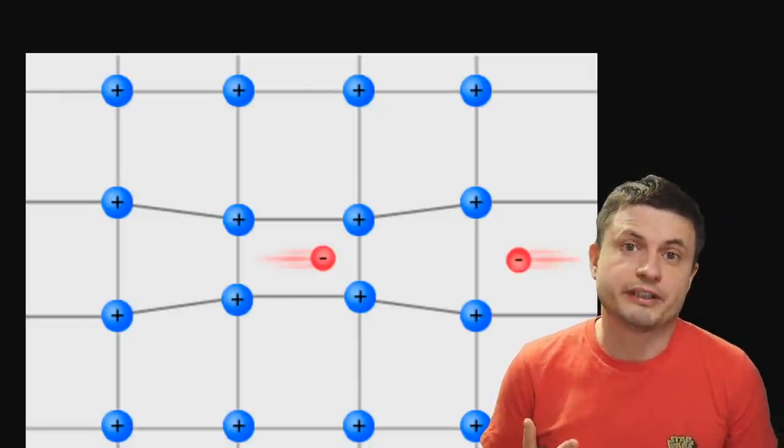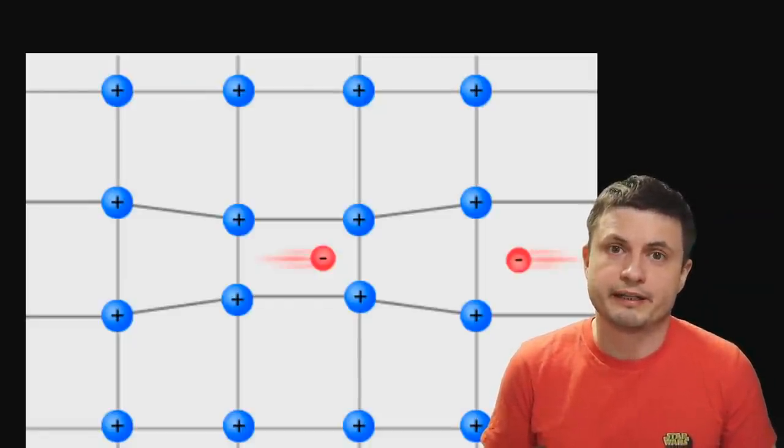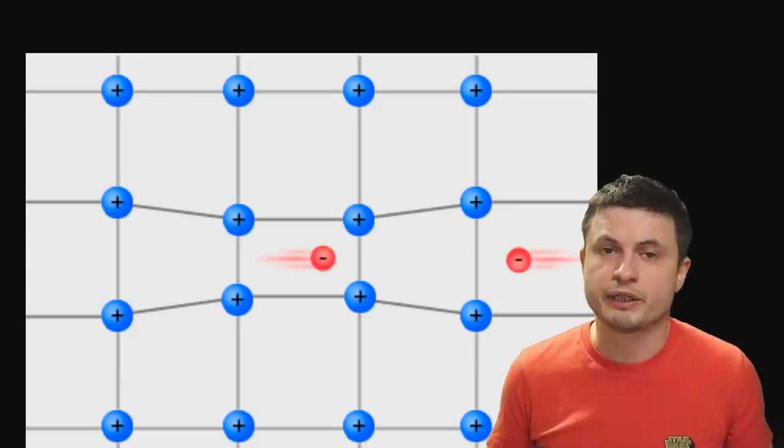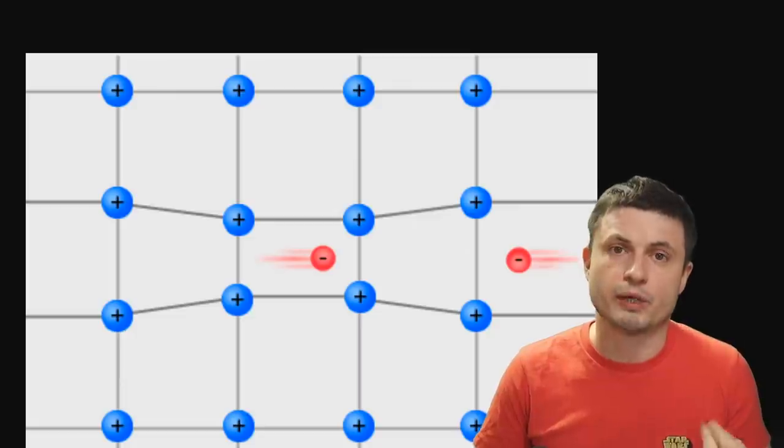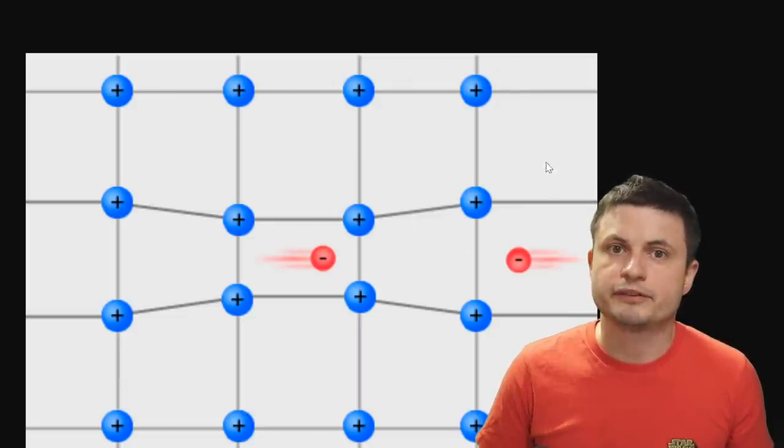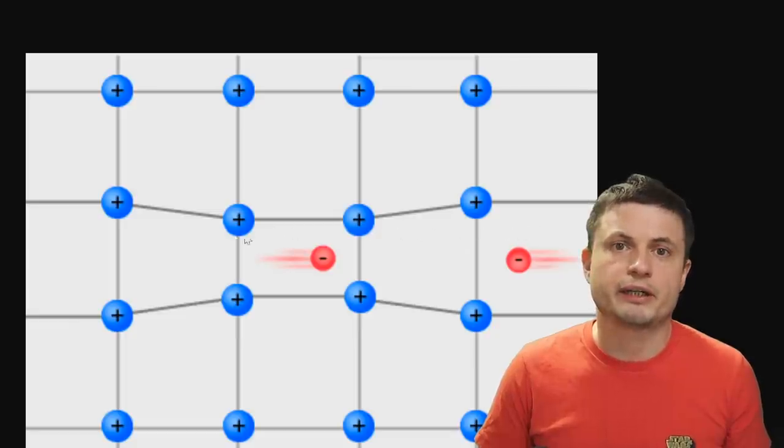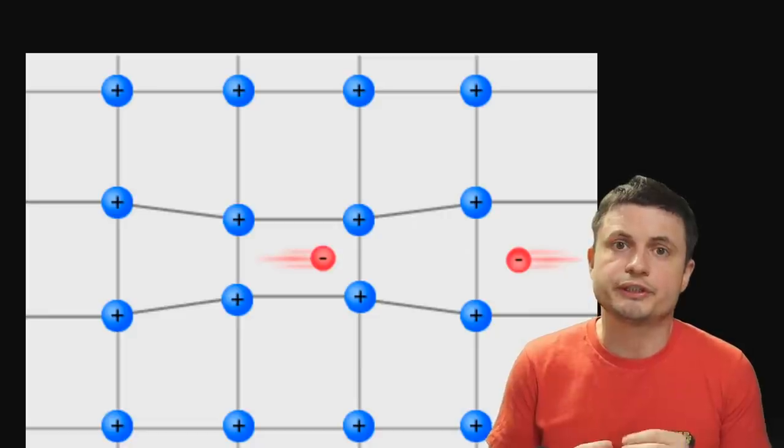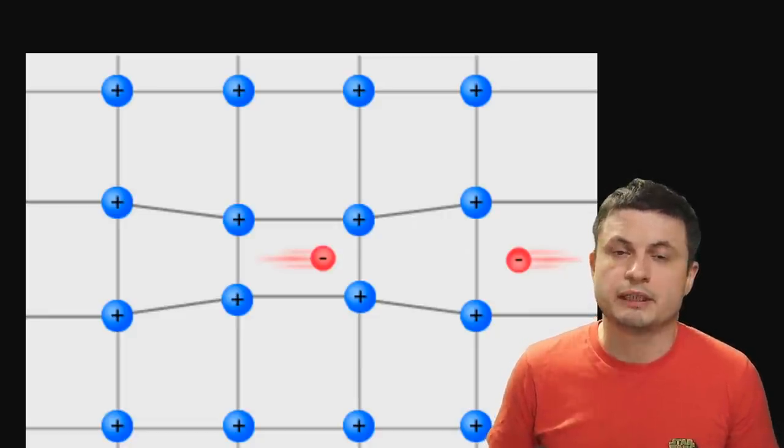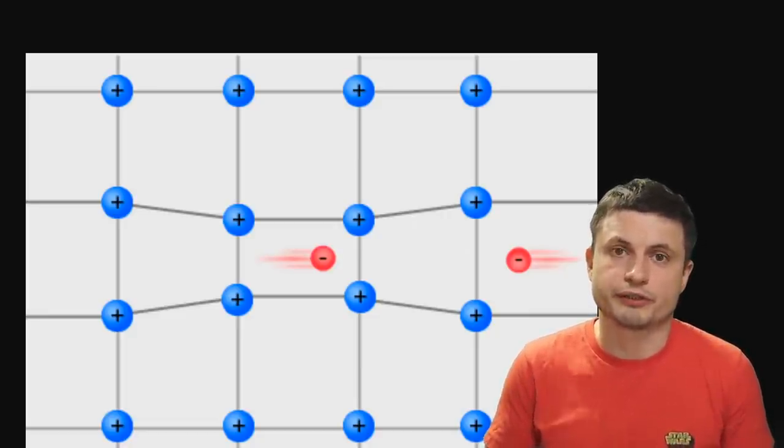For example we kind of understand why resistance happens, why things are not superconductive. When electrons move through those materials, they start interacting with the lattice of atoms around them. Like for example if this is the copper wire, this is the structure inside of this wire, and these right here are the electrons moving through them, interacting with the atoms and also losing a little bit of conductivity. In a nutshell that's how resistance works.